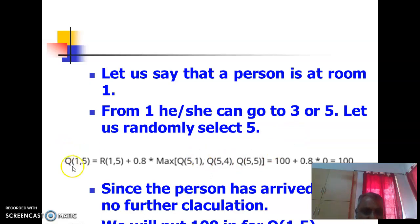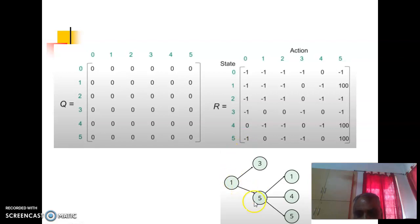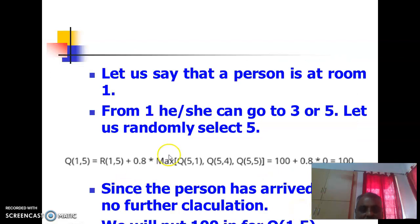Now this calculation has to be done for all states and all actions. So let us write Q(1,5) = R(1,5) + 0.8 * Max[Q(5,a)]. Because 5 is my next state. 1 is selected, next state is 5 randomly, so 5 is my next state. From 5 the person can go to 1, 4, 5, in this we have to find the max. So max Q(5,1), Q(5,4), and Q(5,5).